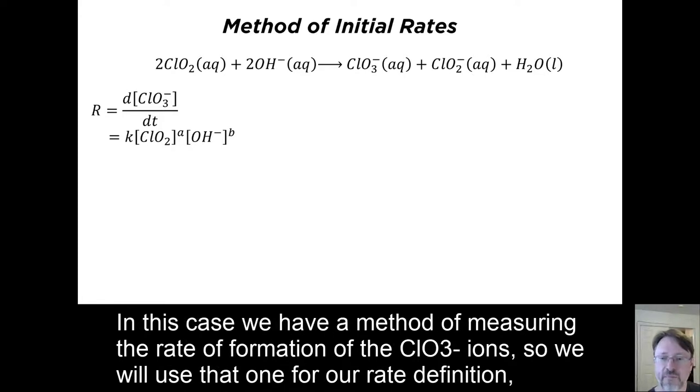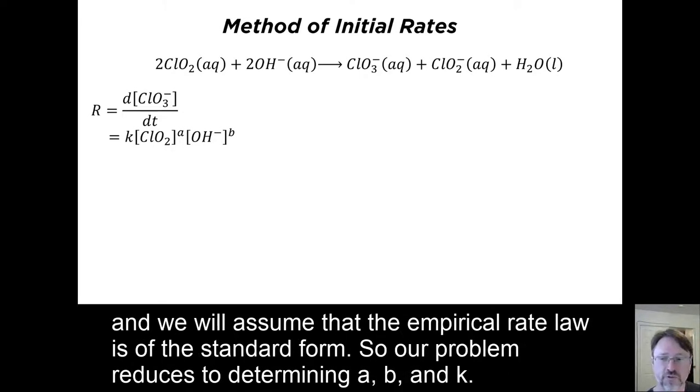In this case, we have a method of measuring the rate of formation of the ClO3 minus ions. So we will use that one for our rate definition. And we will assume that the empirical rate law is of the standard form. So our problem reduces to determining A, B, and K.